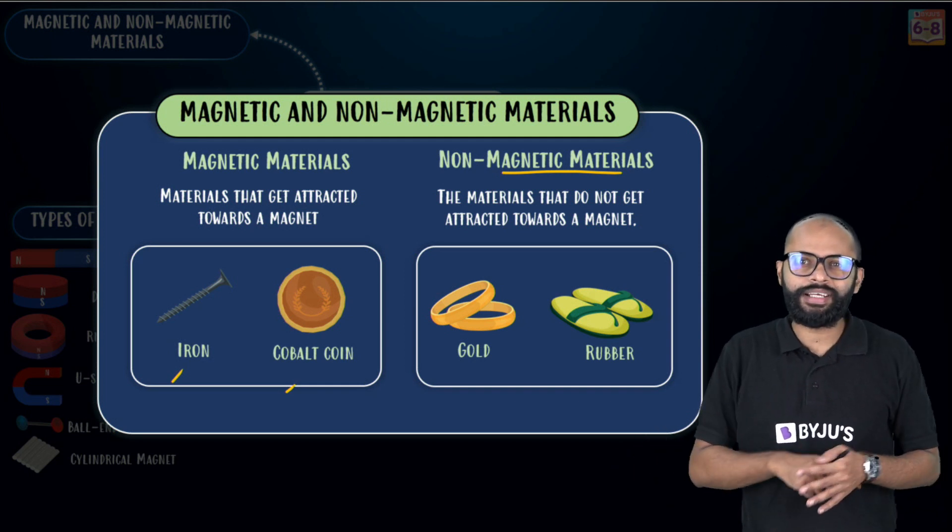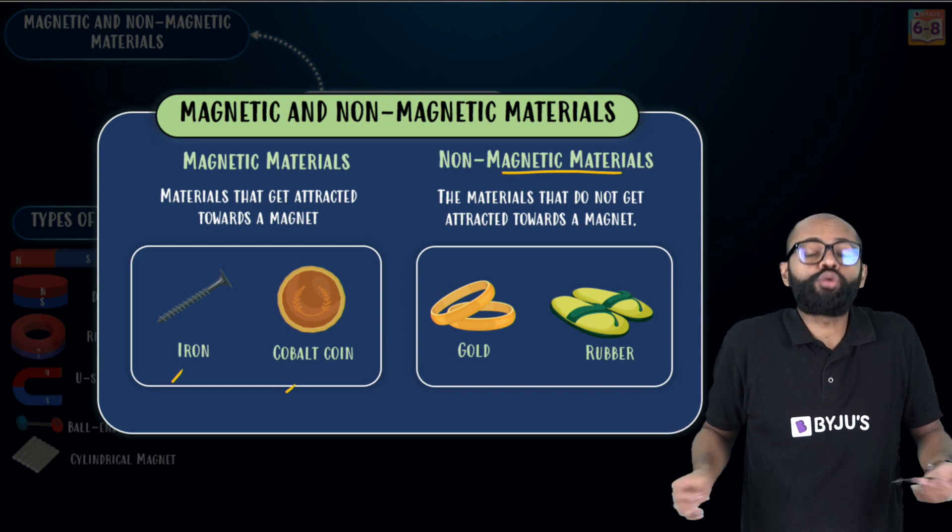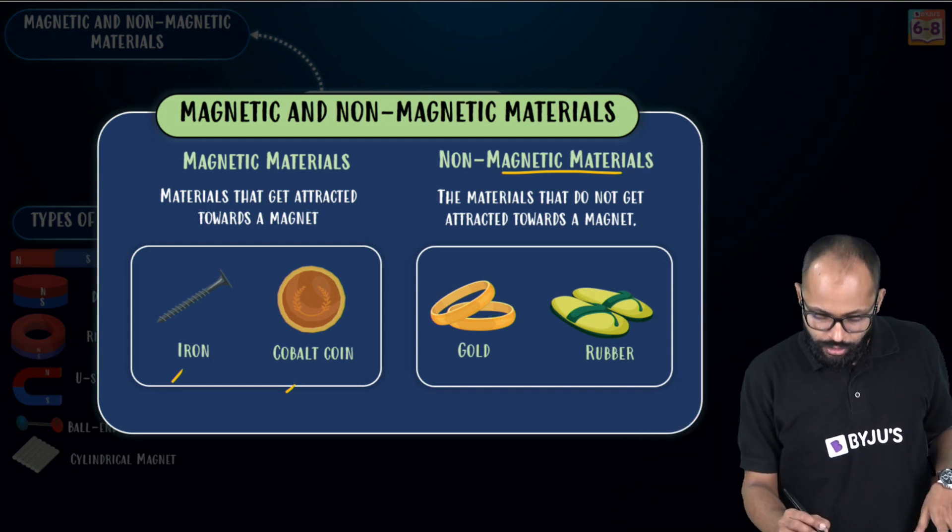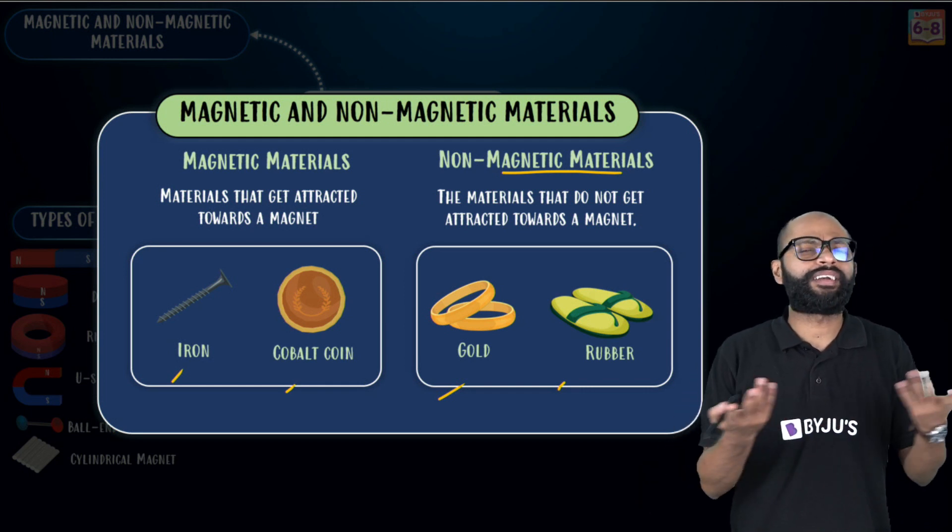Non-magnetic. Who is it? Who are you? I don't know you, right? So non-magnetic materials are who don't know the magnet, who don't respond to the magnet. Like gold, rubber, plastic, paper. All these are non-magnetic materials. Magnet, if you bring closer, it won't do anything.